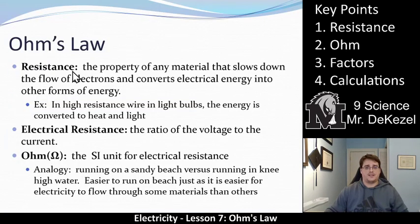Resistance is a property of any material that slows down the flow of electrons. Some things don't let electrons flow through. Some let them go through, but let them go through slowly or quickly, and the ones that let them go through have a level of resistance. If it goes through fast, there's low resistance. If they're slow, it's high resistance. So it's a property of any material that slows down the flow of electrons and converts electrical energy into other forms of energy. In high resistance wires and light bulbs, the energy is converted into light and heat. That's why we can see the light coming off and feel the heat if we don't wait long enough after turning it off to change it.